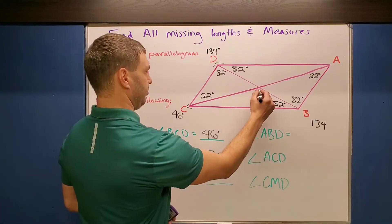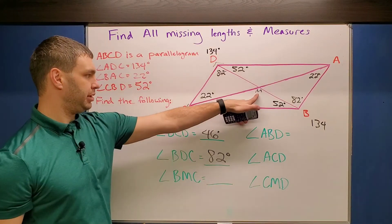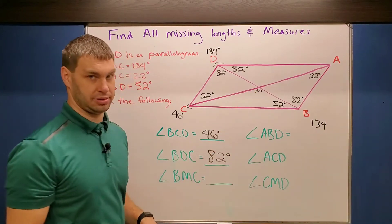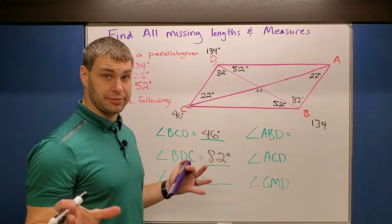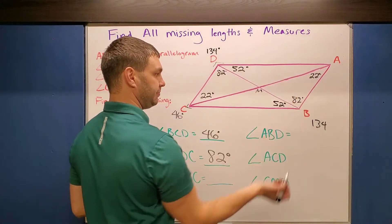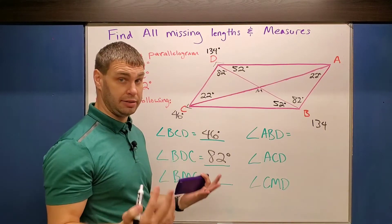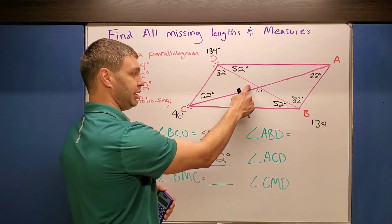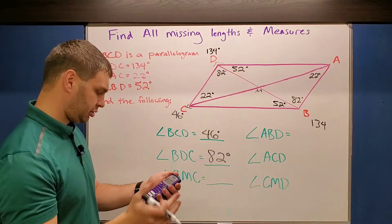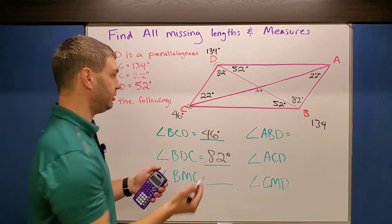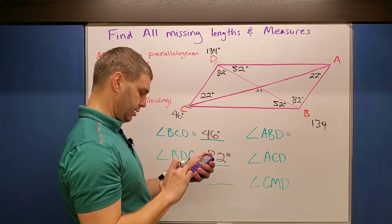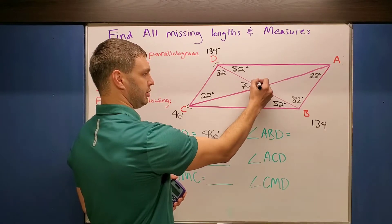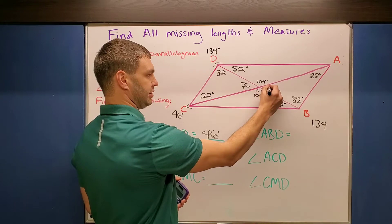Next is BMC — the middle M is probably for midpoint. BMC is my middle angle here, and that one could be a little tricky. With rectangles, squares, parallelograms, you'll notice they're broken into four triangles. If you can find two angles in a triangle, you can find the third, since all angles in a triangle add up to 180 degrees. So here, I take 82 plus 22 — that's 104 — and subtract from 180, giving 76 degrees. Then I have a linear pair, so this angle M is 104. These are vertical angles, so we get 104, 104 and 76, 76 degrees.